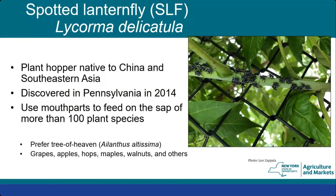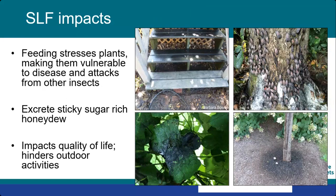Spotted lanternfly is a plant hopper native to China and parts of Southeast Asia. It was first discovered in Pennsylvania in 2014 in Berks County and has slowly spread outward from there. It uses piercing-sucking mouthparts, similar to a mosquito — they pierce the plants and the plant pressure pushes the sap through them. They feed on over 100 different plants, but prefer tree of heaven, Ailanthus altissima, which is also an invasive species. What we're most concerned about is damage to crops like grapes, hops, apples, maples, and walnuts.